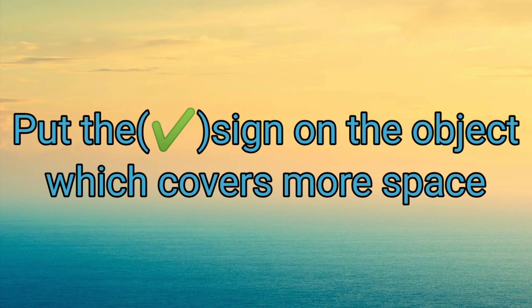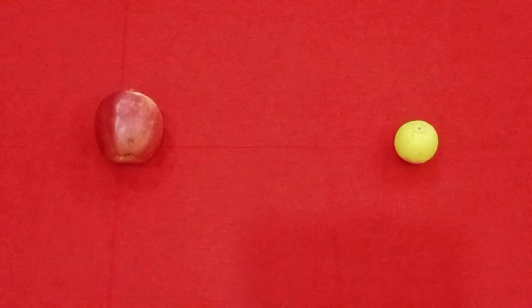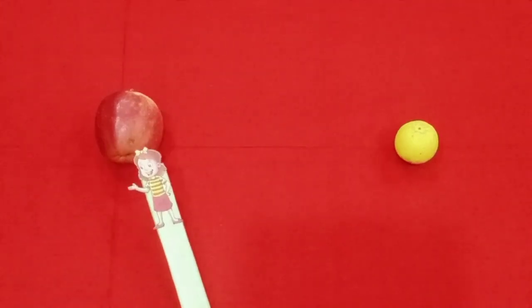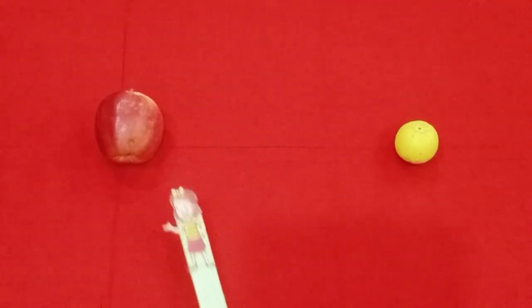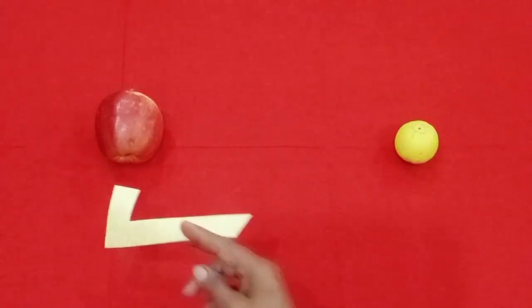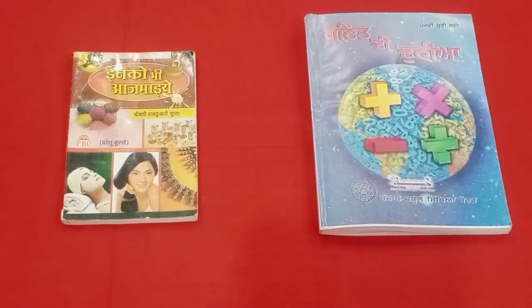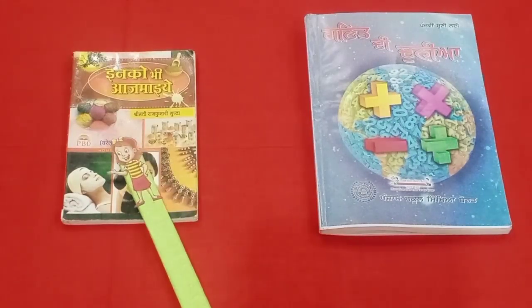Now you have to tell: out of an apple and a lemon, which object covers more space? Apple — yes! Now we put a tick sign on the apple.